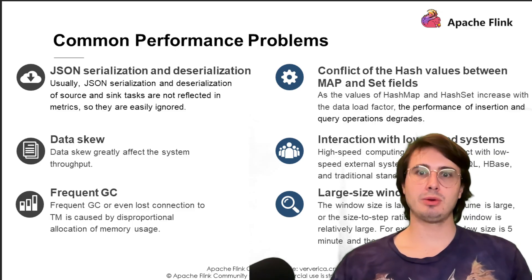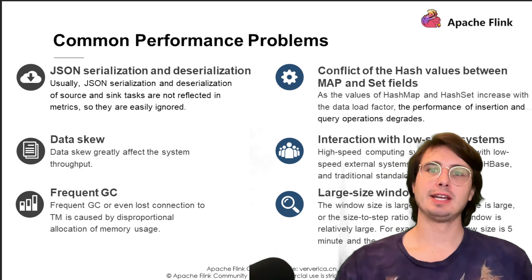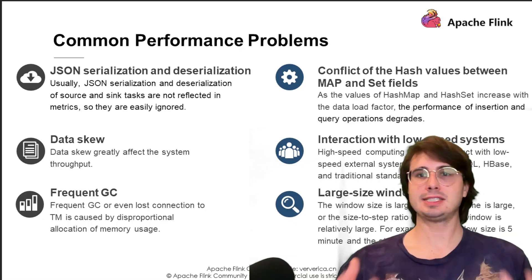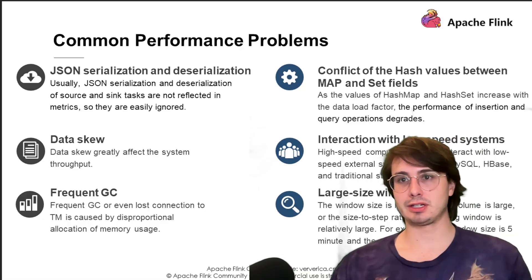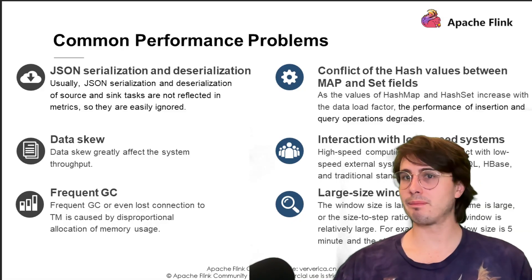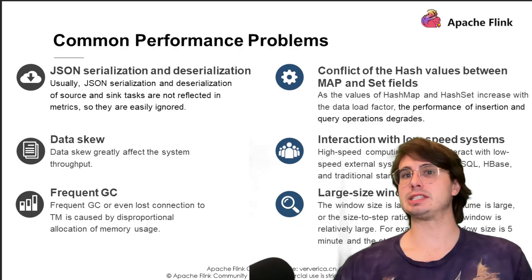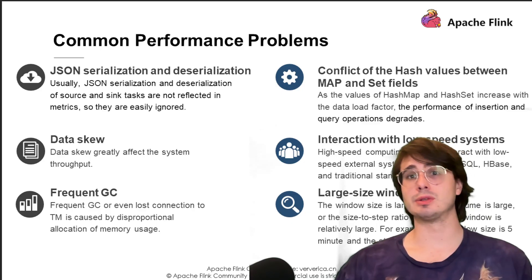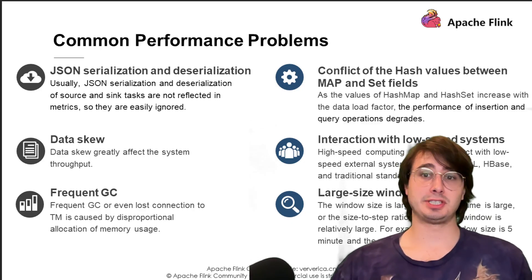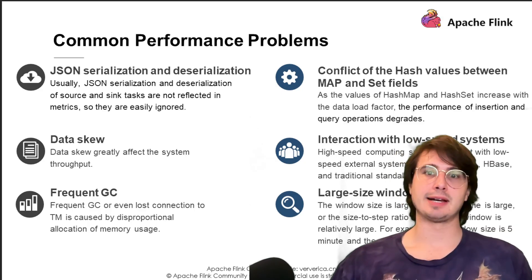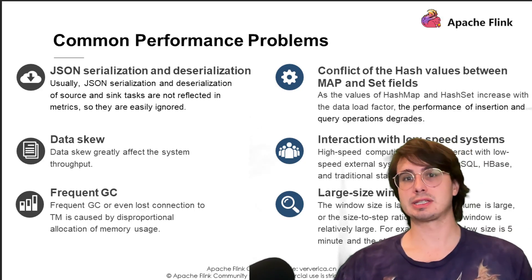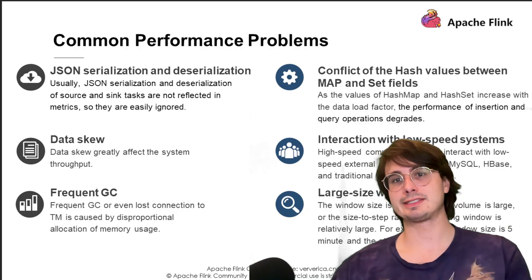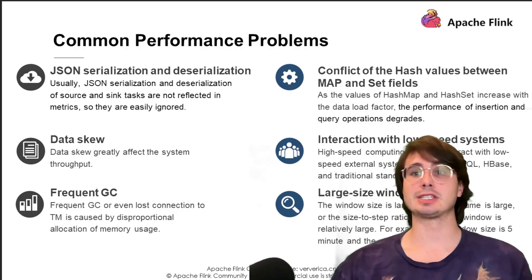Now let me wrap up with some common problems and how to solve them. First, checkpoint timeouts indicate underlying performance or configuration issues. When a checkpoint is consistently timing out, investigate whether the state size has grown beyond expectations, if there's back pressure preventing checkpoint barriers from flowing through the job graph, or if the checkpoint storage system is experiencing performance issues. Solutions include enabling unaligned checkpoints, increasing checkpoint timeout values, optimizing state access patterns, or upgrading storage system performance.